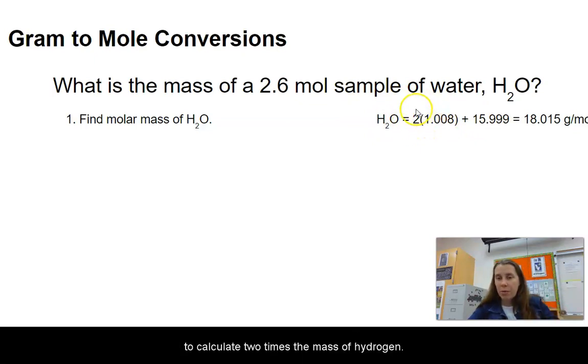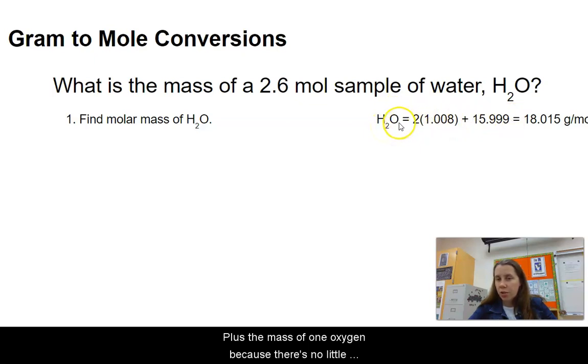2 times the mass of hydrogen. Remember that 2 comes from our subscript 2 here, plus the mass of 1 oxygen, because there's no little subscript by the oxygen. So when we multiply that out, we'll get 18.015 grams per mole.